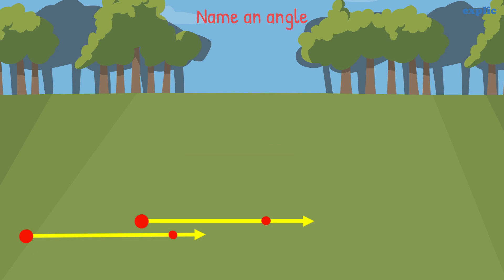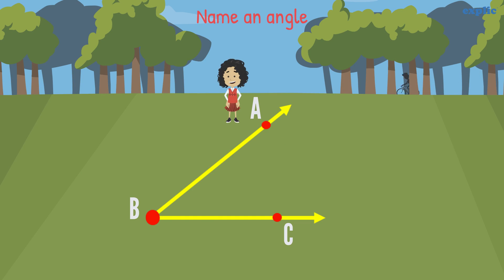To name an angle, draw the angle and name the points. Write the letters in order of A, B, and C with an angle symbol in the front. Or, you can also write in reverse order.